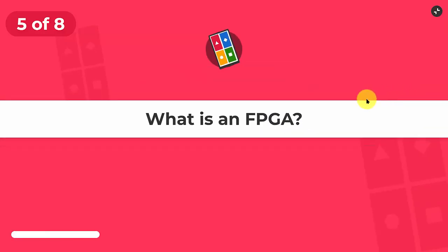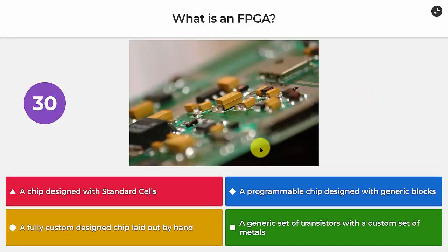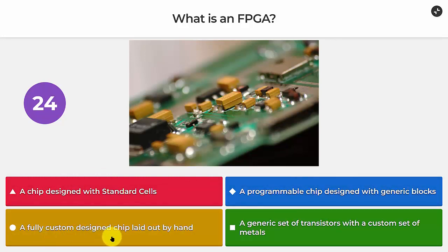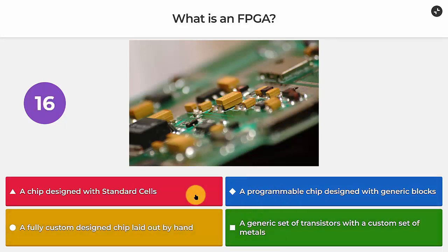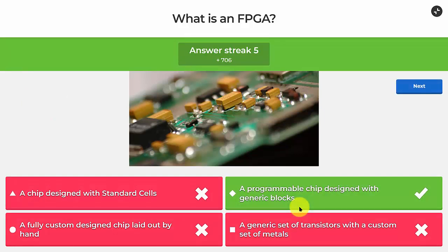Question five: what is an FPGA? Options are: a chip designed with standard cells; a programmable chip designed with generic blocks; a fully custom design chip laid out by hand; or a generic set of transistors with a custom set of metals. The answer is a programmable chip designed with generic blocks.